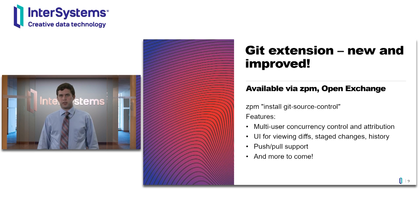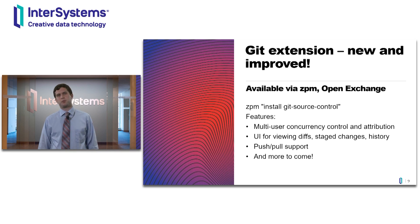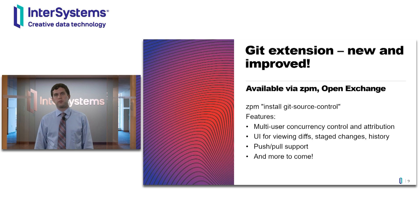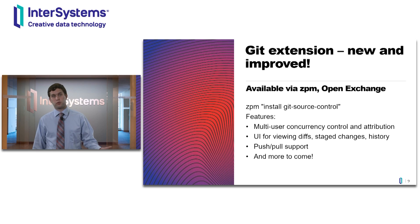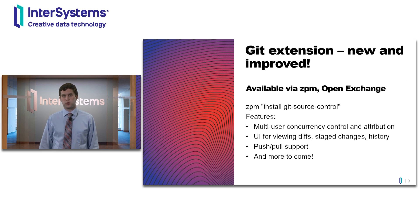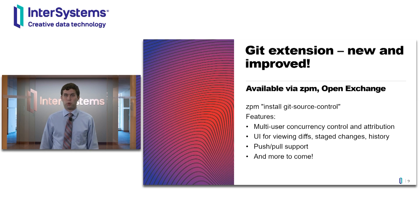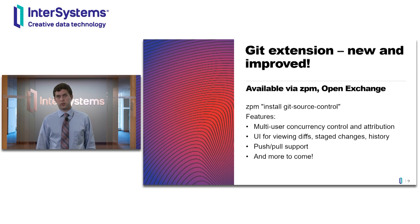So this brings us to our new and improved Git extension, available through the InterSystems Package Manager and through the Open Exchange. You can get it by running zpm install git-source-control. Features include multi-user concurrency control, so if multiple developers are working on the same remote environment they won't be stomping on each other's changes, and attribution for multiple developers so in the commit history you can see who did what. There's a user interface included for viewing diffs, staging and committing changes, going through the whole history of the repository, browsing the tree, and much more. There's also push and pull support for working with remote repositories through menus in Studio and VS Code.